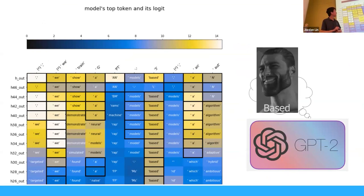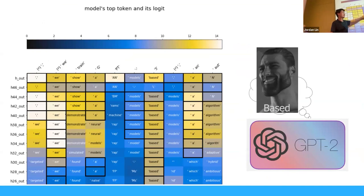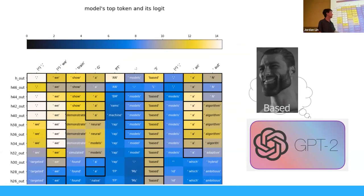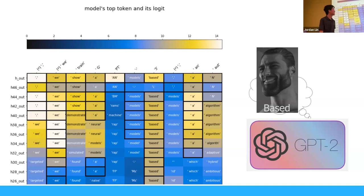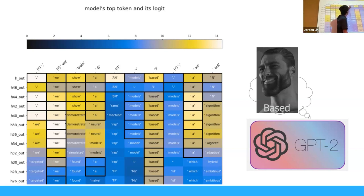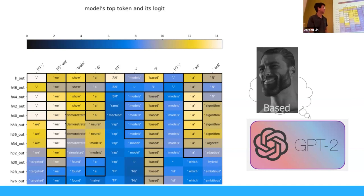The colors in the visualization represent the logits — yellower tokens mean higher probability. These are the top probabilities. For example, it thinks 'machine' is top probability after 'we train G-machine' — that doesn't make much sense early on. But later it figures out GAN, because a GAN is the type of machine you'd probably want to train. Also, for some reason GPT-2 thinks 'we train GPT-based' — it's thinking about being 'based' the whole time.